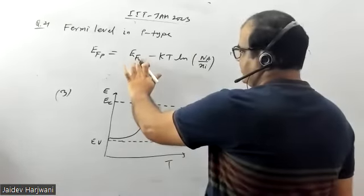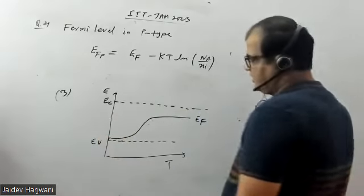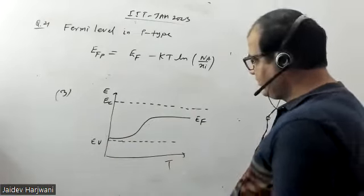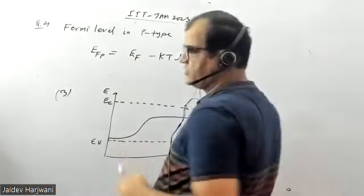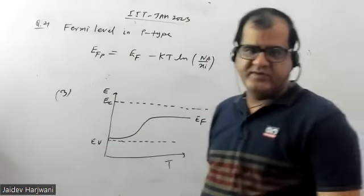This is the variation of Fermi position with temperature for a p-type semiconductor, and this is option 3. Option 3 is the correct answer for this question.